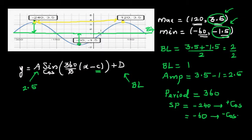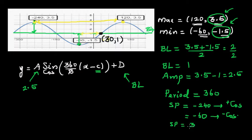If you're starting at the baseline, a quarter wavelength of 360 is 90, so −60 + 90 = 30. So the coordinate (30, 1) is on the baseline. If the starting point is 30 and you're going up, that's a positive sine graph. If you take the point (−150, 1) and you're going down from there, that's a negative sine graph.